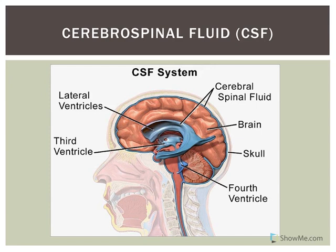Cerebral spinal fluid is fluid that circulates through the subarachnoid space around the brain and in the spinal cord. It is also located within the ventricles — certain cavities in the brain — and in the central canal of the spinal cord. We have about 150 mL total volume, and about a liter of CSF is secreted every day.